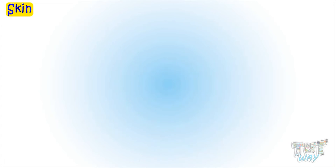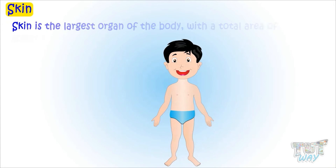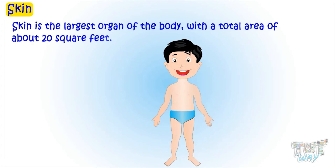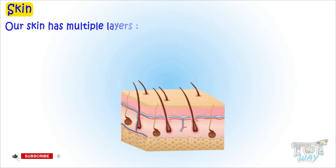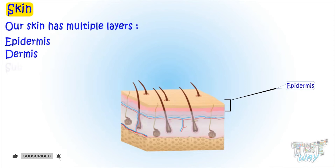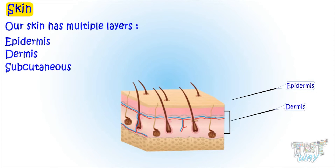The skin is the largest organ of the body, with a total area of about 20 square feet. Our skin has multiple layers: epidermis, dermis, and subcutaneous.